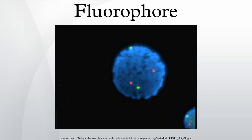Fluorophores of particular importance in the field of biochemistry and protein studies — for example in immunofluorescence, but also in cell analysis such as immunohistochemistry — are detailed in the article on fluorescence in the life sciences.